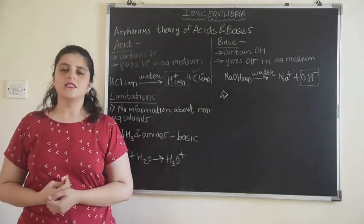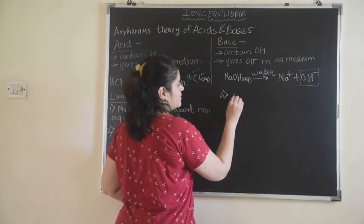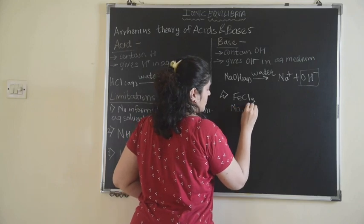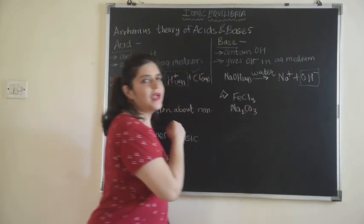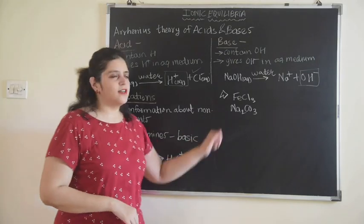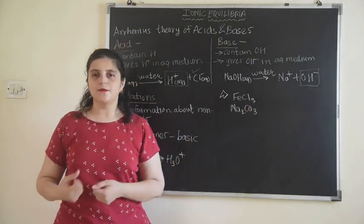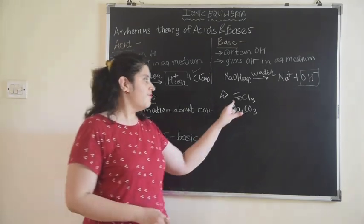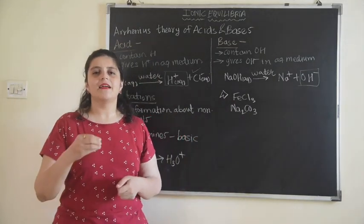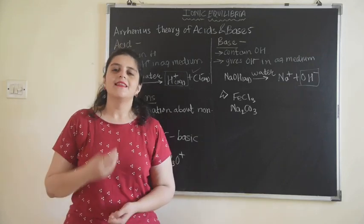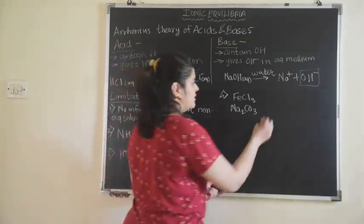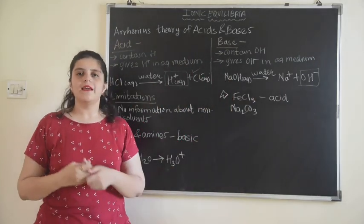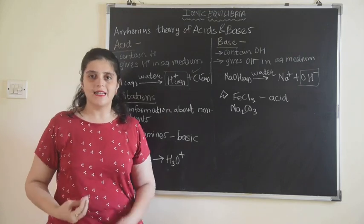There are certain substances like FeCl₃ and Na₂CO₃. When we dissolve FeCl₃ in water, it acts as an acid. When Na₂CO₃ is dissolved in aqueous solution, it acts as a base. But according to Arrhenius theory, an acid must give H⁺ and a base must give OH⁻. There is no H⁺ in FeCl₃ and no OH⁻ in Na₂CO₃, yet they still act as acid and base in aqueous medium. Arrhenius theory provides no explanation for such substances.